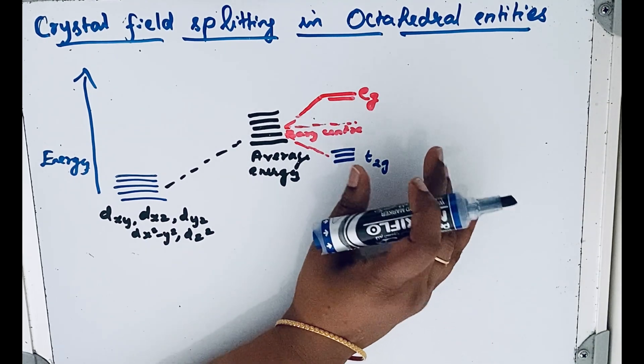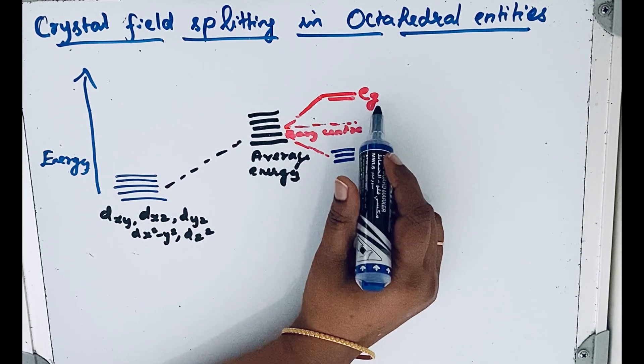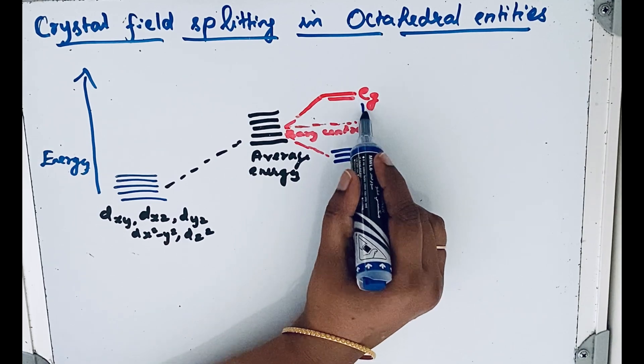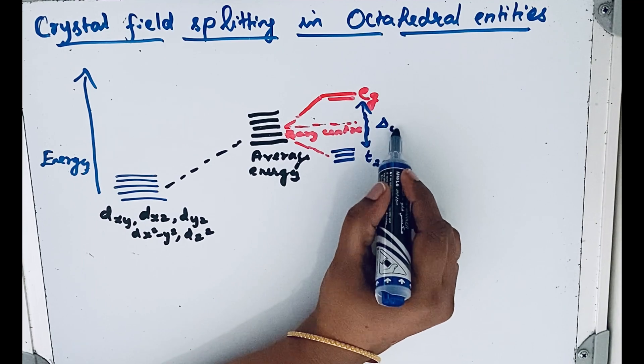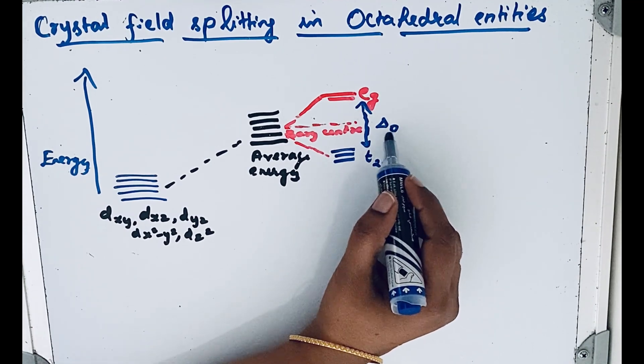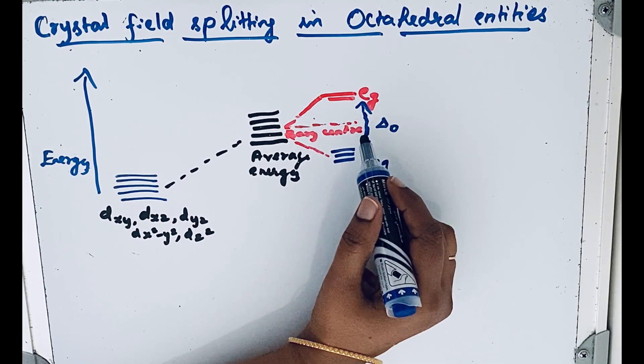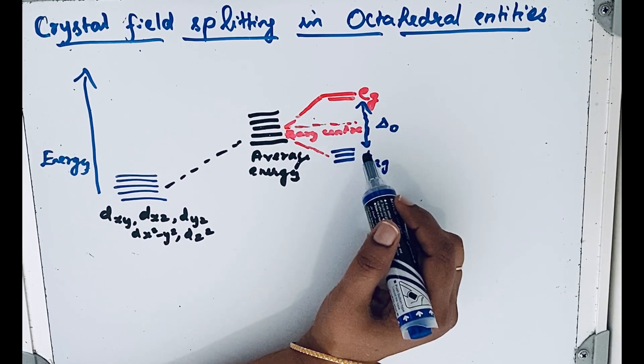This is a symmetrical octahedral geometry, so we use the t2g and eg orbitals. This energy difference we call delta-o, where 'o' stands for octahedral field. This energy difference between the two sets of orbitals is called the crystal field splitting energy.